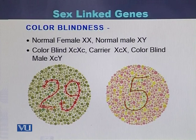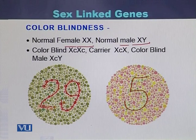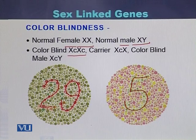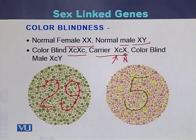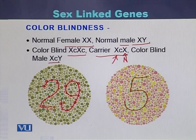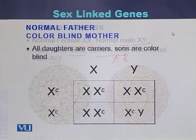In terms of how color blindness inherits: a normal female is XX and a normal male is XY. In case of color blindness, a female will have the disease if she has both affected alleles. If she has one normal copy and one affected copy of the X chromosome, then she will be the carrier of color blindness. In case of a color blind male, the allele present on his single X chromosome will be the affected one.